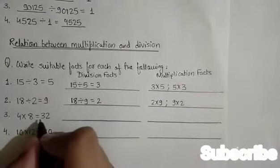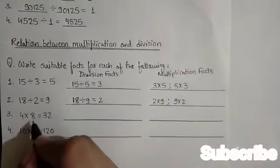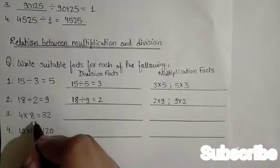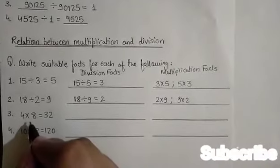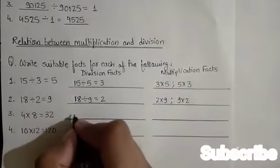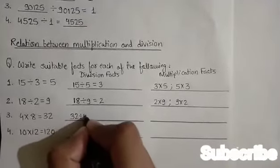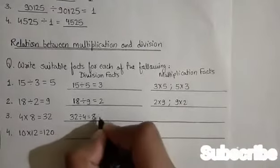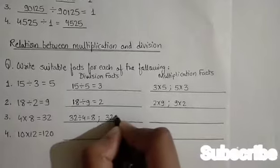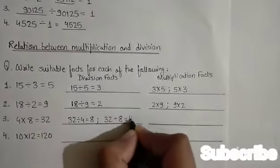4 into 8 equals 32. Ab ye ek multiplication fact hai, toh iske do division fact honge aur iska ek multiplication fact hooga. So the division facts for 4 into 8 equals 32 are: 32 divided by 4 equals 8, and 32 divided by 8 equals 4.